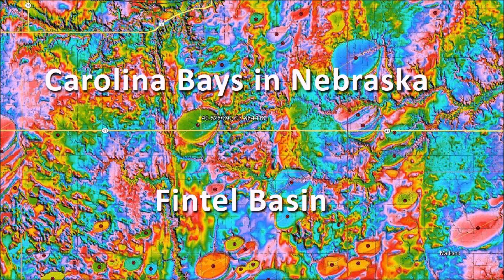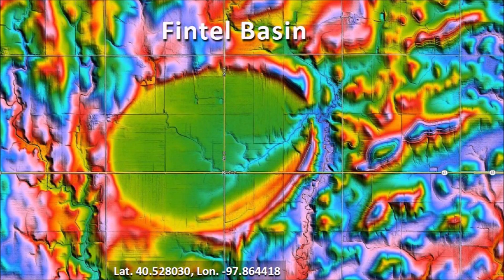Fintel Basin is one of the elliptical geological features called Nebraska Rainwater Basins. These basins have many characteristics in common with the Carolina Bays, including the orientation of their major axis toward the Great Lakes. Michael Davies named this bay Fintel Basin after a historic landowner because the U.S. Geological Survey had not given a name to this gentle depression found 8 kilometers due south of Sutton, Clay County, Nebraska.